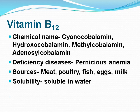Vitamin B12: its chemical name is cyanocobalamin, hydroxocobalamin, methylcobalamin, or adenosylcobalamin. Deficiency disease: pernicious anemia. Sources include meat, poultry, fish, eggs, and milk. It is soluble in water.